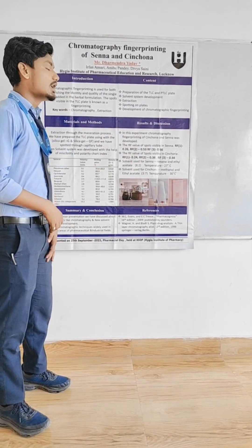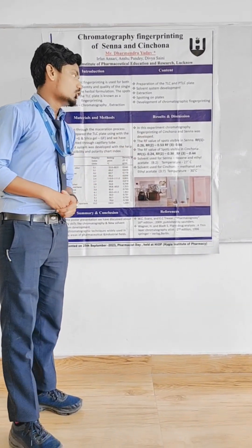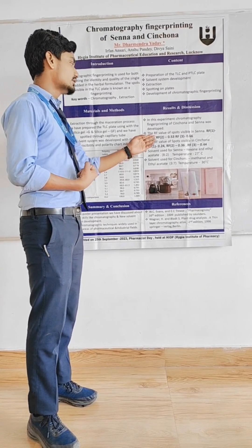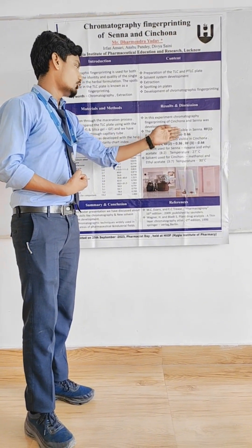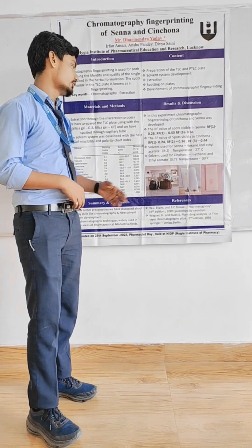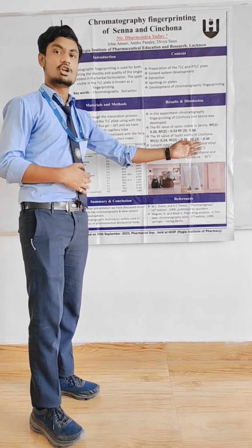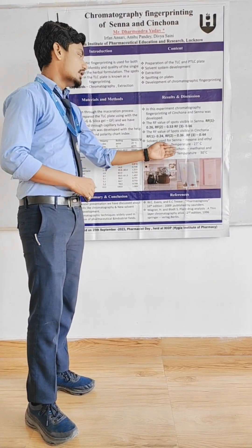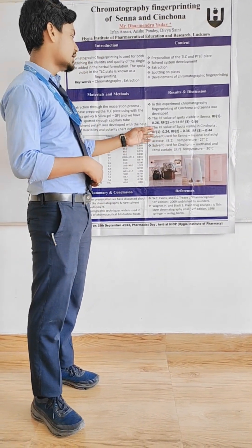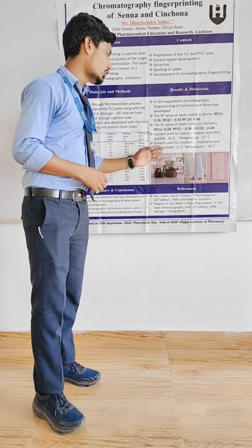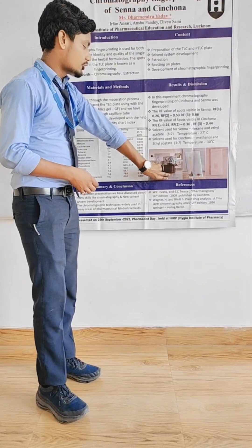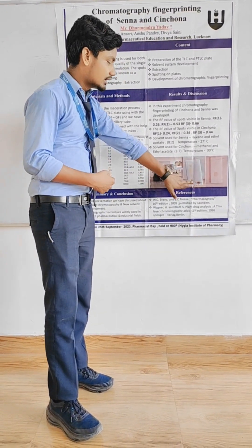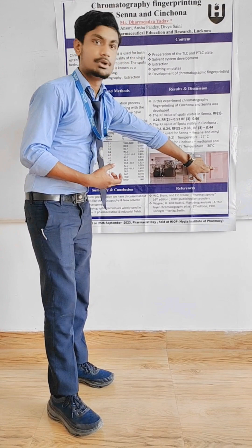Next, we discuss our results. In this experiment, we developed the chromatographic fingerprinting of Cinchona and Senna. We developed the fingerprinting of Cinchona, showing the RF values of Cinchona spots. The solvent system used was ethyl acetate and ethanol. The temperature was 27 degrees. The first chemical used was Cinchona and the second was Senna. These are the TLC plates showing the fingerprinting of Cinchona and Senna.